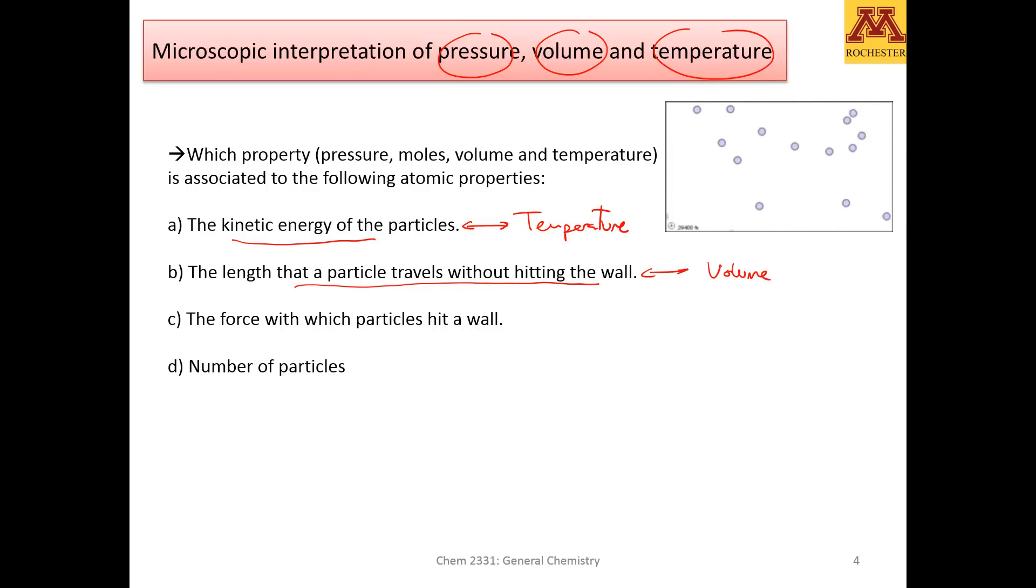The length that a particle travels without hitting the wall, that is related to the volume. So, from a particle perspective, the size in which the particle can move without hitting a wall is related to the volume. And then, one of the most important properties in this chapter is the force with which the particle hits a wall, and that's what the pressure is. Pressure has units of force over surface, and that will be very important to have both an atomic and a macroscopic vision of pressure. You can think of pressure as how hard and how many particles are hitting a wall. Notice that it's both how hard and how many per unit of surface they hit the wall.